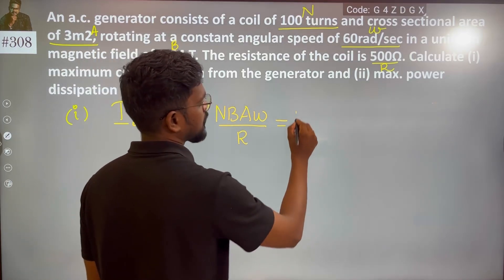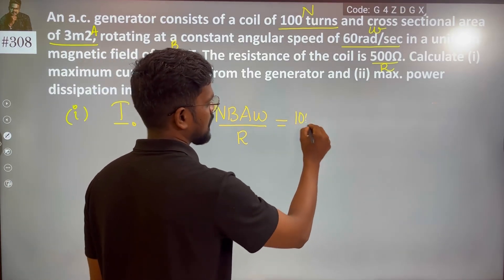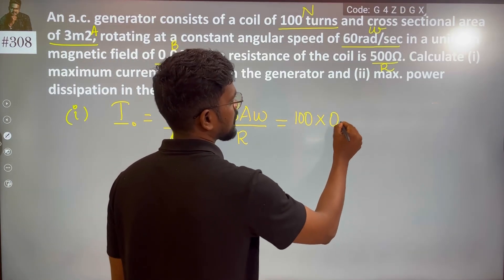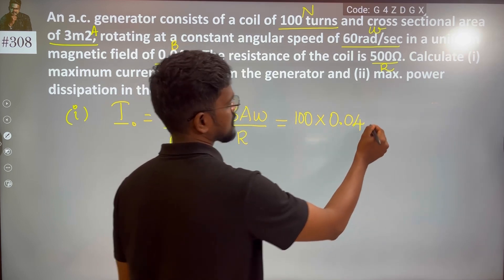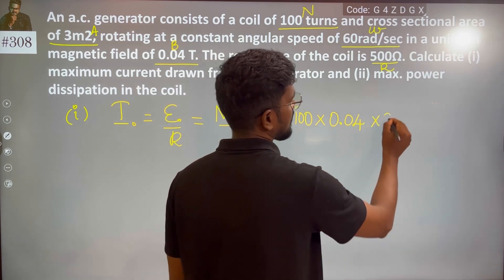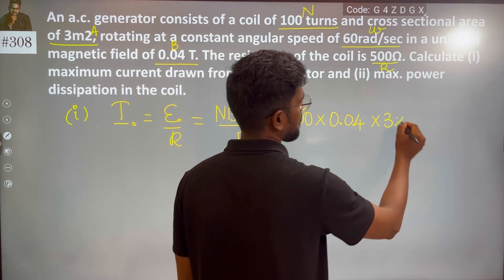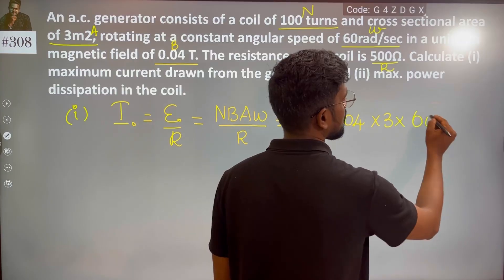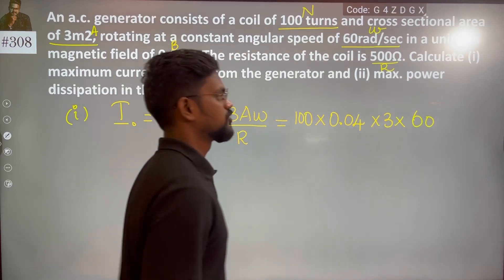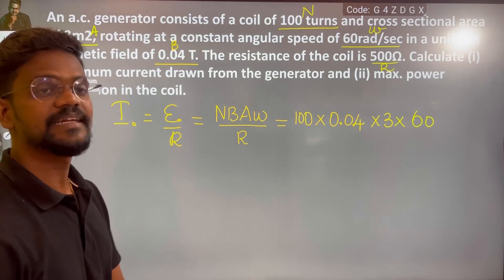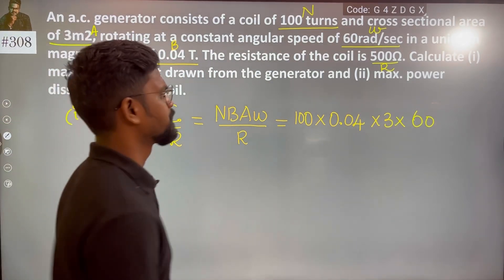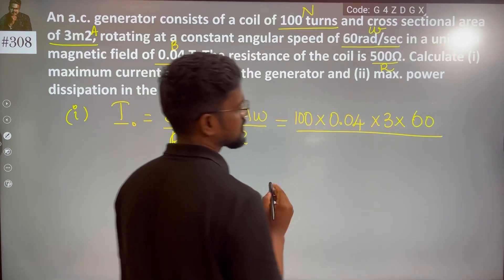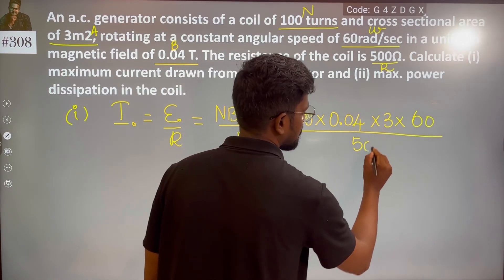So: N is number of turns which is 100, B is 0.04 tesla, area is 3 meters squared, omega which is angular speed is 60 radians per second, upon resistance of the coil which is 500.